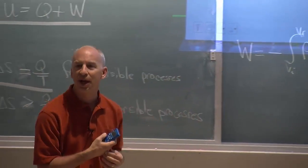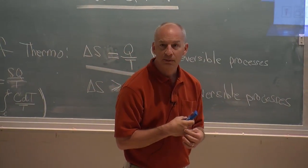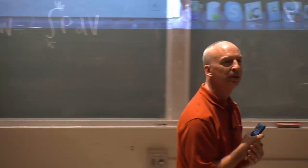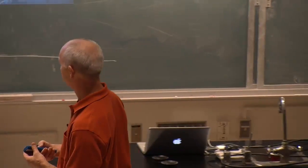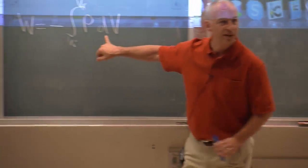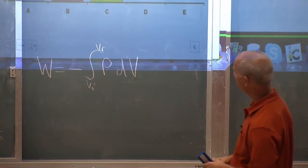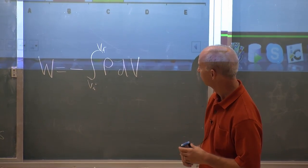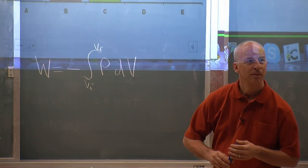Anyone have another way of thinking about that to decide that W is negative? Yeah? I was just thinking about the integral equation for W. So, this integral? Yeah. Because the end, the final volume is bigger than the initial. So, it comes out, the integral itself comes out positive and then it's negative.